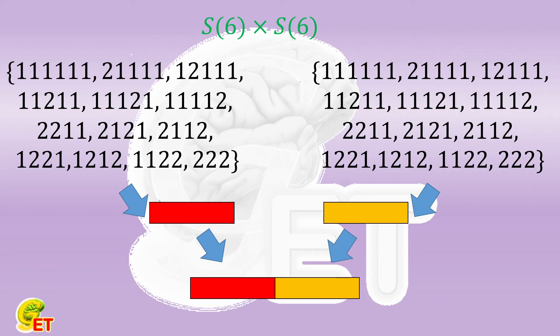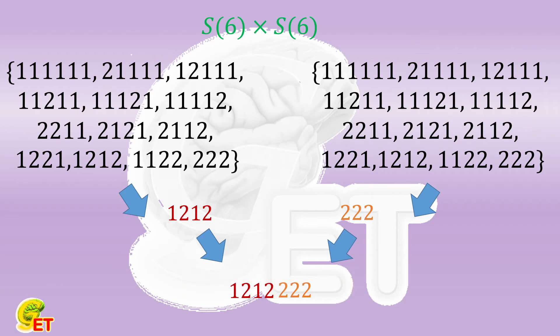For example, if we select 1212 from the first set and take 222 from the second set, the combination is 1212222. We find that the digit sum of such a new number must equal 12.